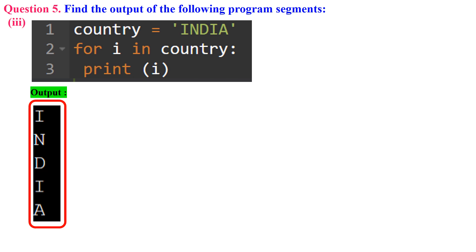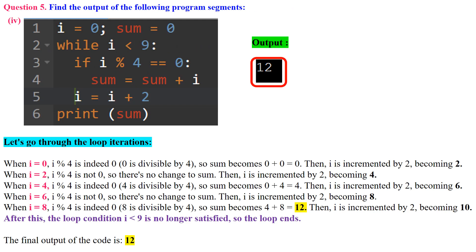Question 5, subdivision 3: This code uses a for loop to iterate through each character in the string assigned to the variable country. The string 'INDIA' is assigned to country, and the for loop iterates through each character represented by variable i. The output is I, N, D, I, A — each character printed on a separate line in the order they appear in the string.